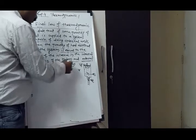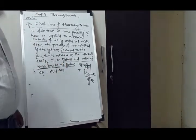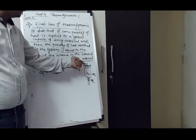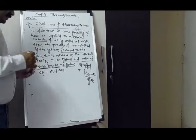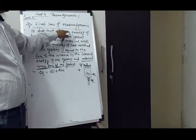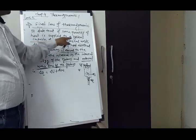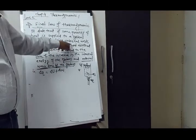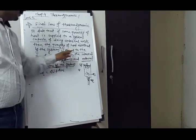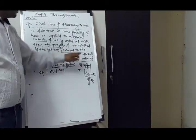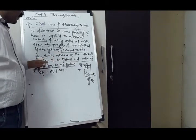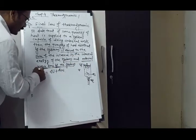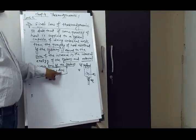Molecules do the work — that is why the statement says external work done by the system. The mathematical form is ΔQ = ΔU + ΔW, where ΔQ is the heat supplied, ΔU is the change in internal energy, and ΔW is the external work done by the system.